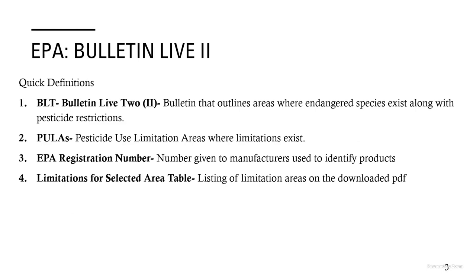Some quick definitions: BL2 is the Bulletin Live 2. PULA stands for Pesticide Use Limitation Areas — the EPA's designated acronym for locations where they don't want you to use chemicals, or want you to limit the amount used. EPA registration numbers are numbers given to manufacturers to identify products. And 'limitations for selected area tables' is a listing of limitation areas on the downloaded PDF.